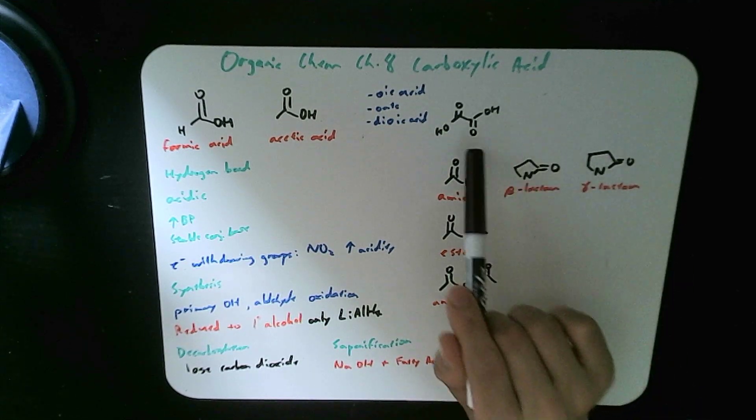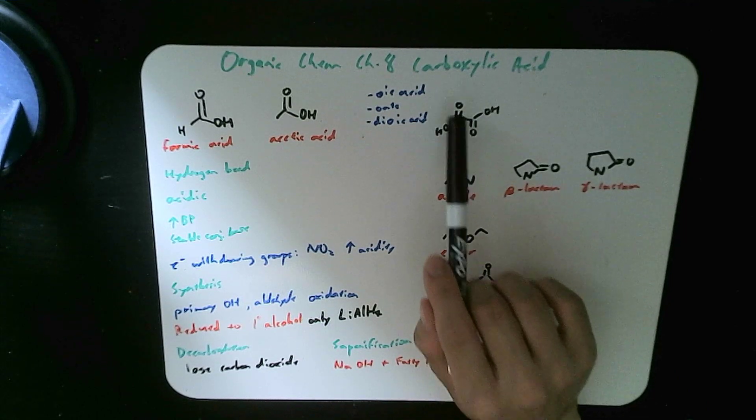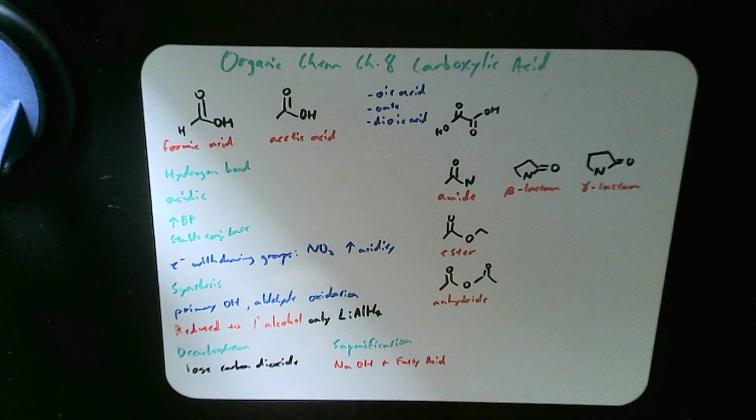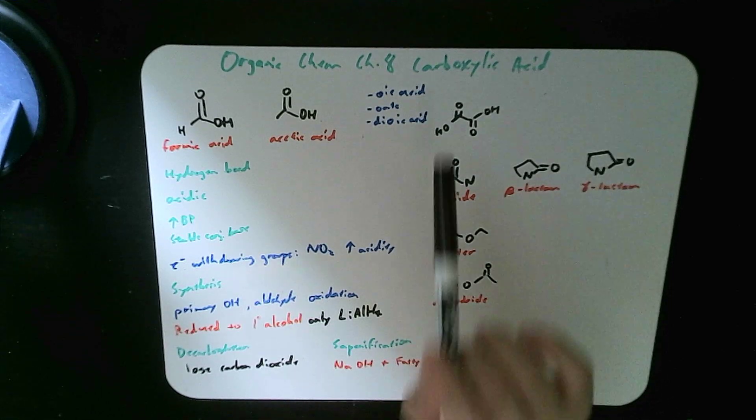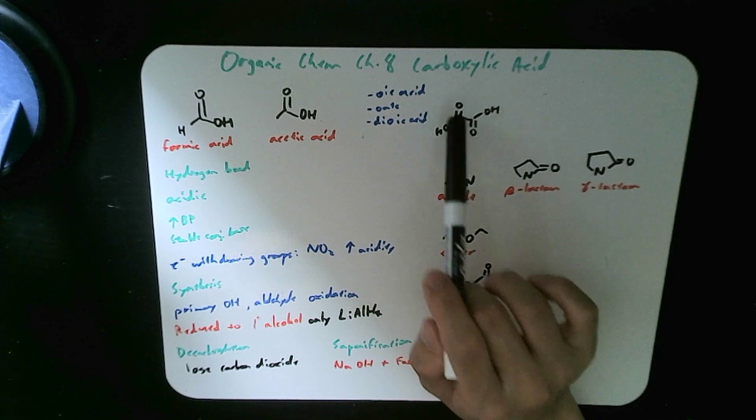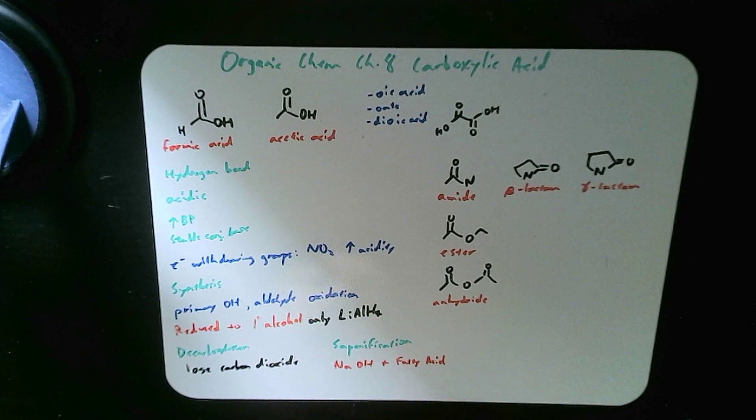We also have what is called a dioic acid, which is two carboxylic acid joining each other. So this is the most basic dioic acid, 1, 2. So ethan dioic acid.